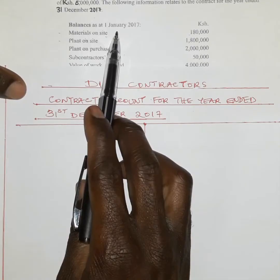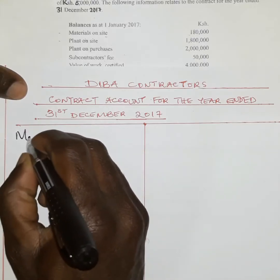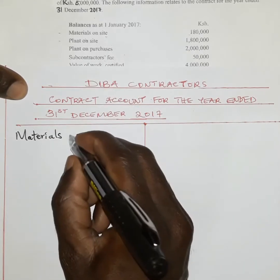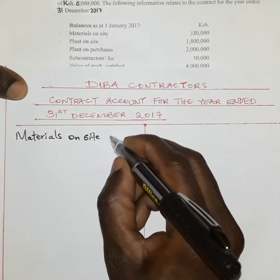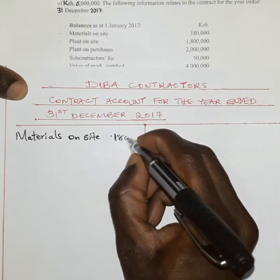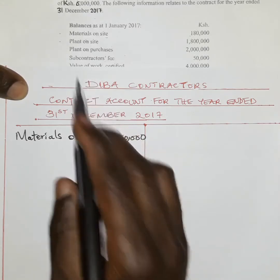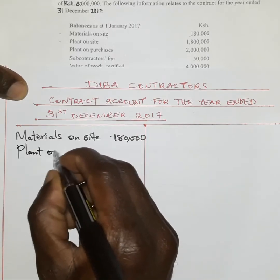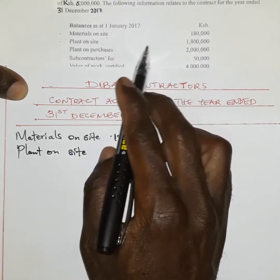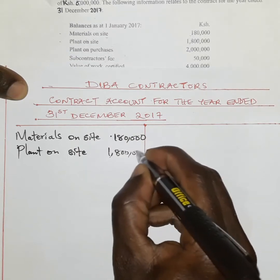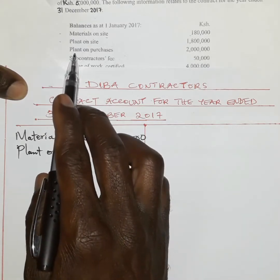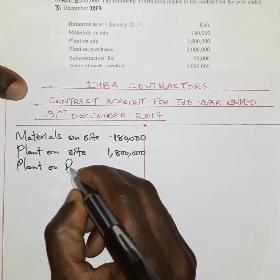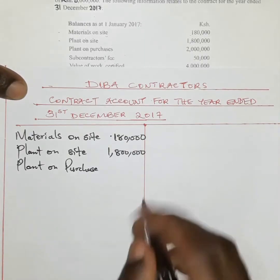Starting with the debit side, we have opening balances brought down: materials on site of 180,000 and plant on site of 1.8 million. Then plant purchases — equipment bought during the period — of 2 million. Next, subcontractor fees of 50,000.